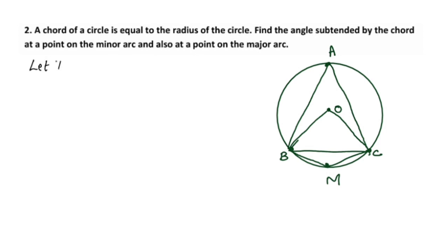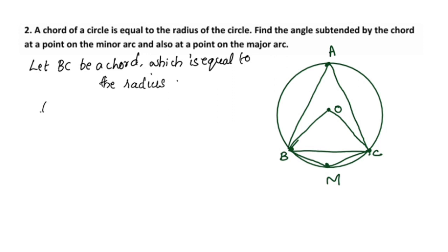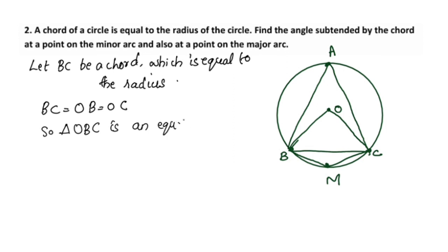Let BC be a chord which is equal to the radius. Therefore BC is equal to OB is equal to OC. Triangle OBC is an equilateral triangle.